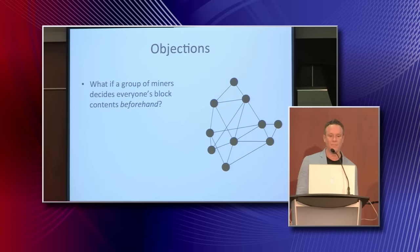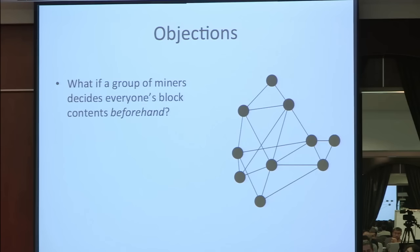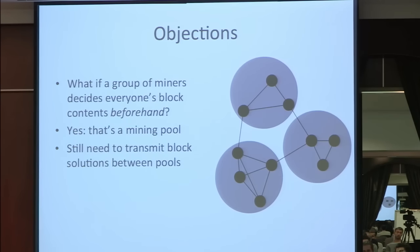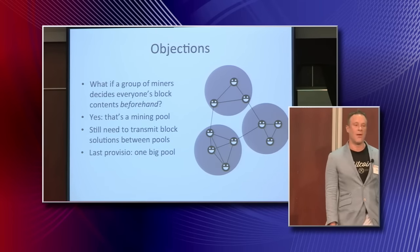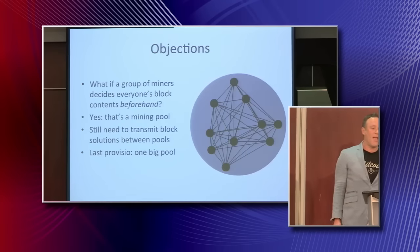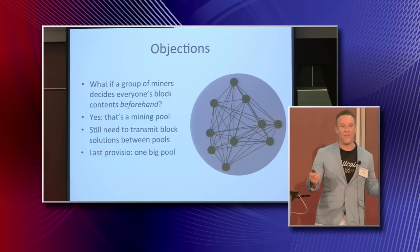Objection: what if a group of miners decides everyone's block contents beforehand? The idea is that they all decide what they're working on beforehand, so this group of miners never orphan each other's blocks. Well, that's called a mining pool. But that doesn't affect the fee market because the mining pools still need to transmit the block solutions between each other. This brings up the last proviso — we need the inflation rate to be non-zero and we need more than one miner or mining pool to exist. If everybody joins the same pool, there's nobody to lose to orphaning and the fee market no longer holds.